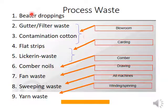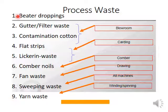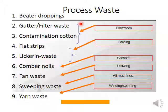Overall, if we calculate the percentage of waste generated in blow room based on the raw material input, it should be around 2.5 to 3.5 percent, depending on the type of raw material — whether Indian cotton or imported cotton. It may vary from 2.5 up to 4.5 percent. On average, the value should be around 3 to 3.5 percent.